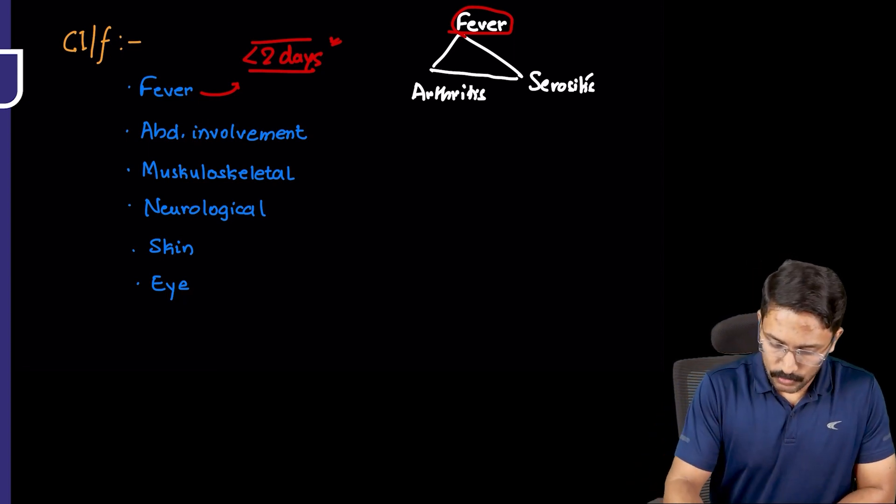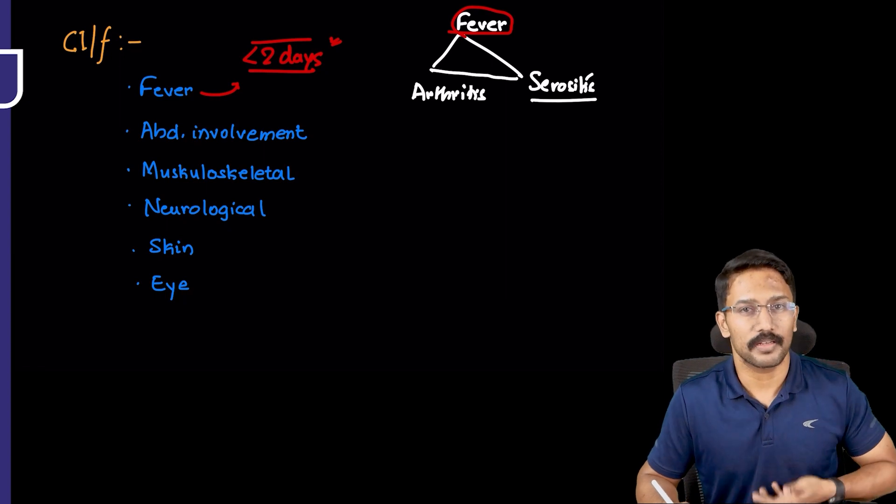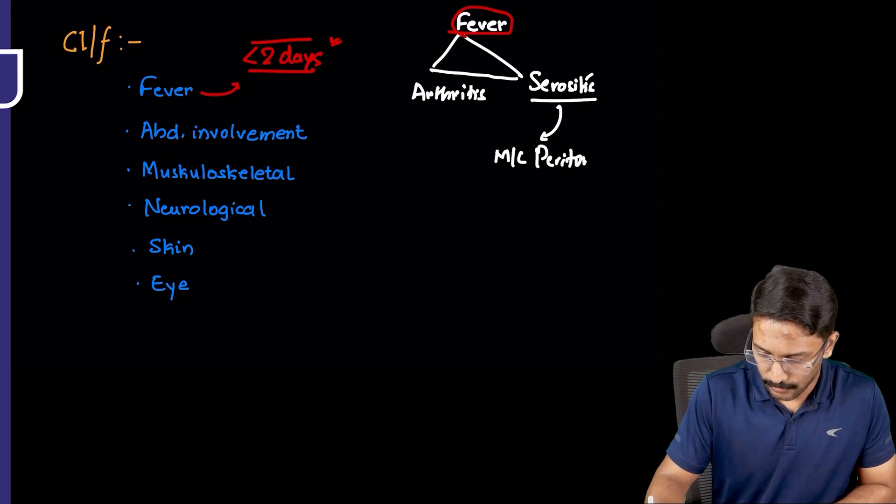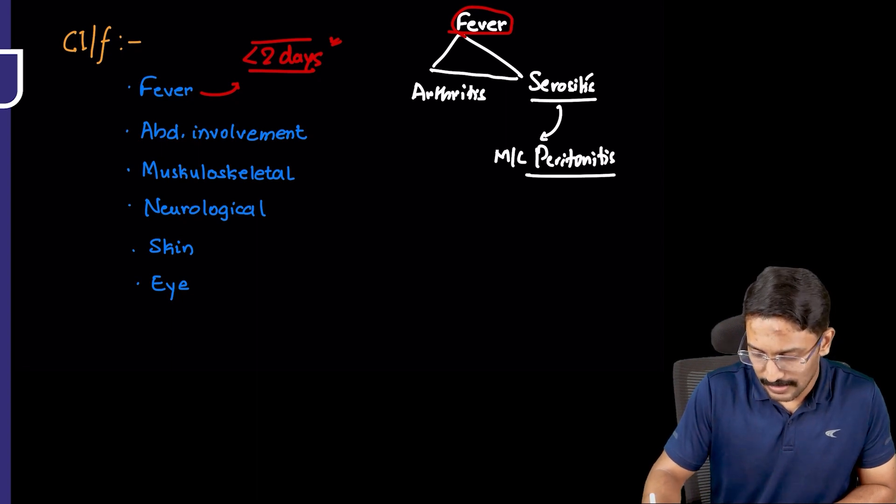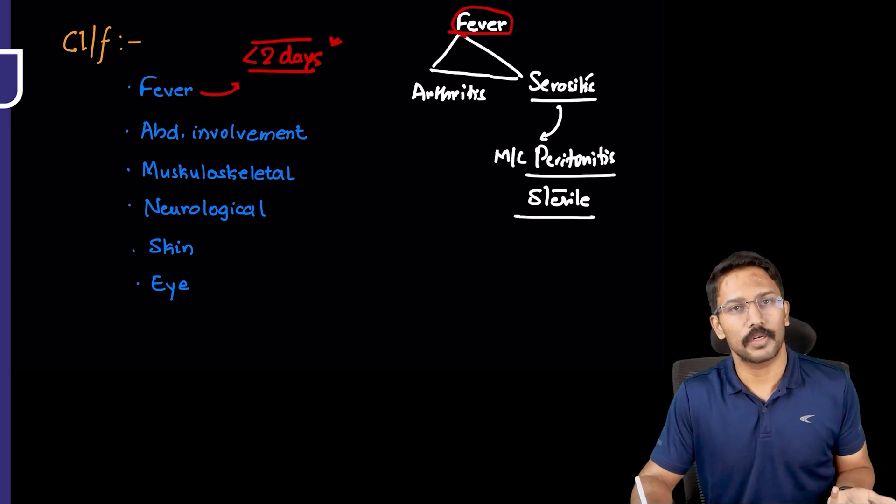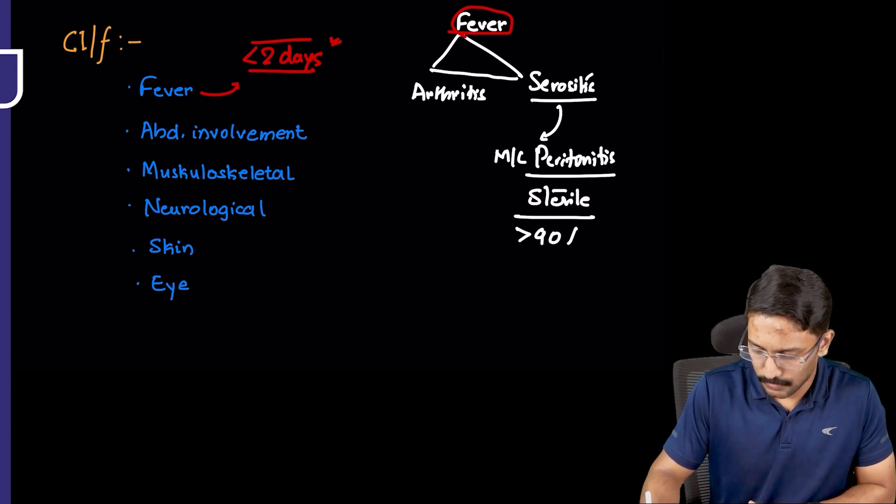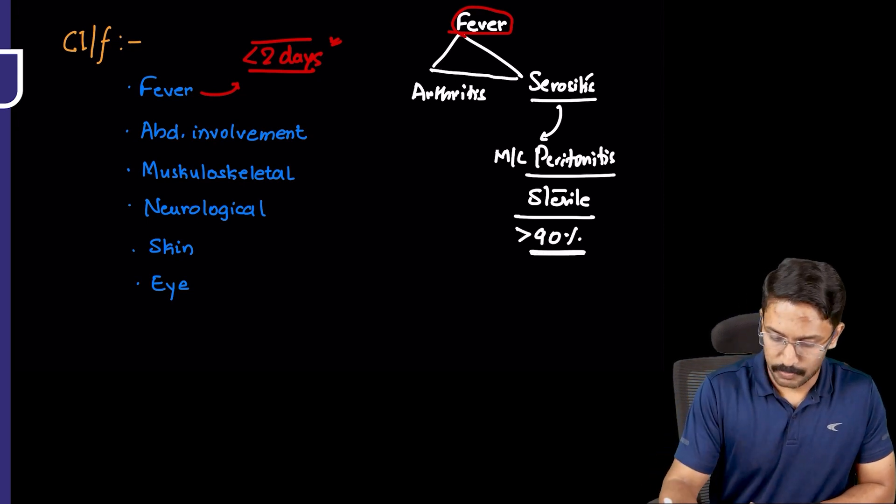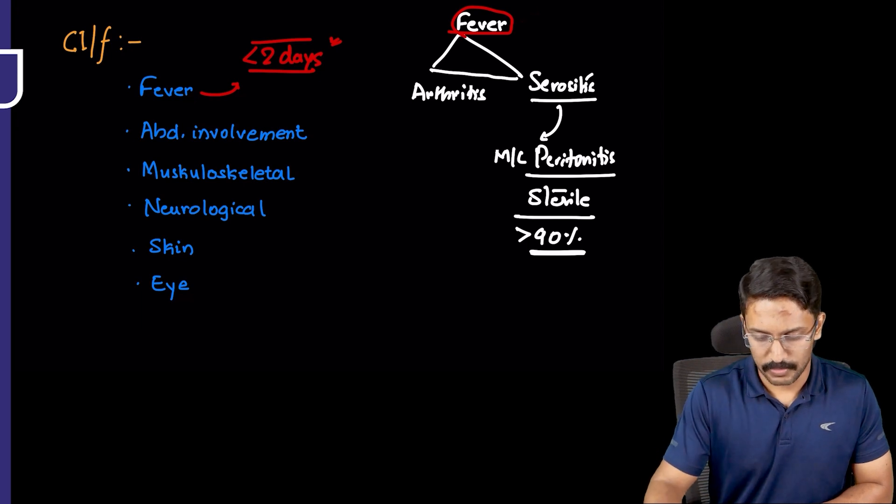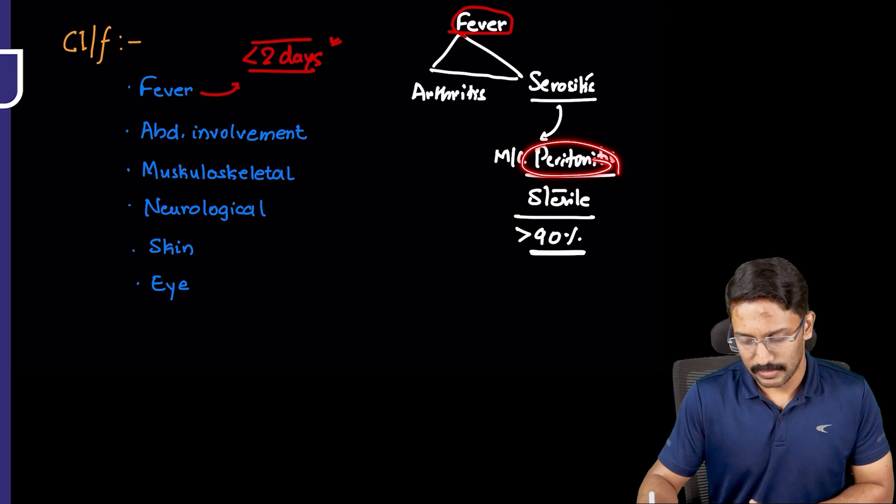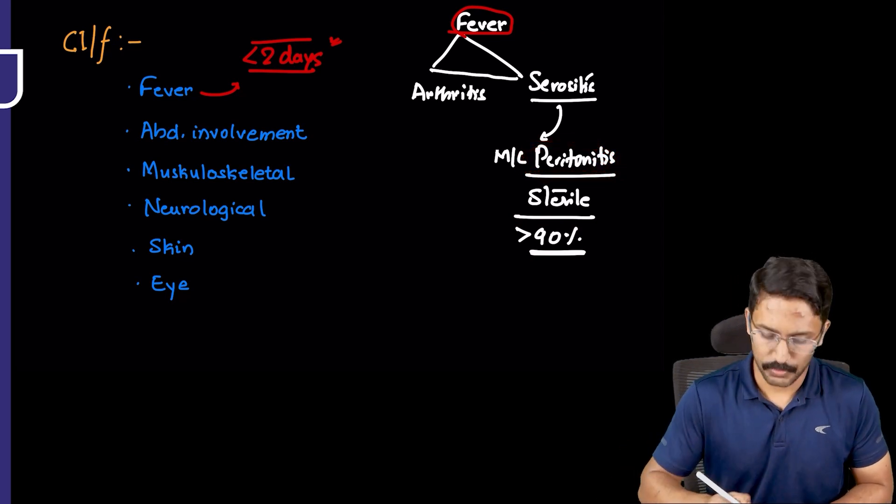The serositis can cause pericarditis, peritonitis, pleuritis, aseptic meningitis, but most common presentation is peritonitis. Obviously, this peritonitis is going to be sterile, just inflammation. Interleukin-1 is responsible for this inflammation. There is no infection. It's seen in more than 90% of episodes where patient presented with fever. If he presented with fever 10 times, at least 9 times he will also have abdominal pain.